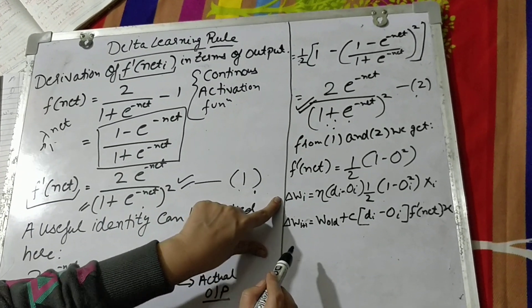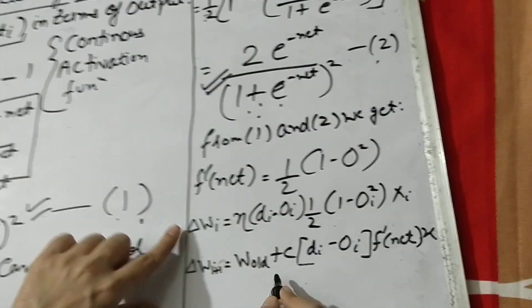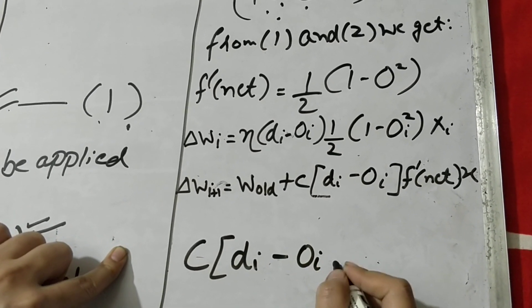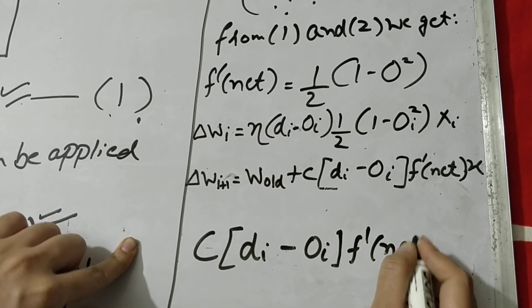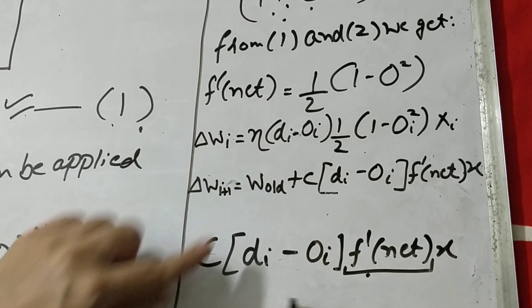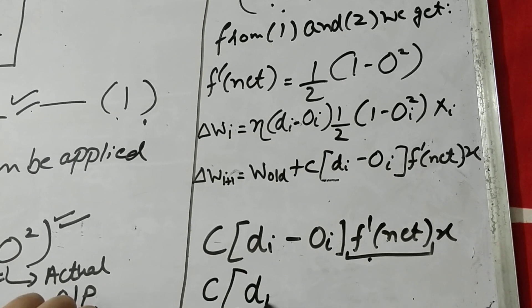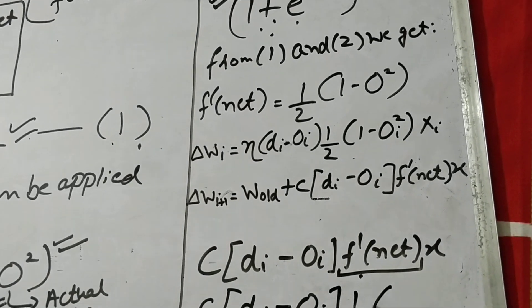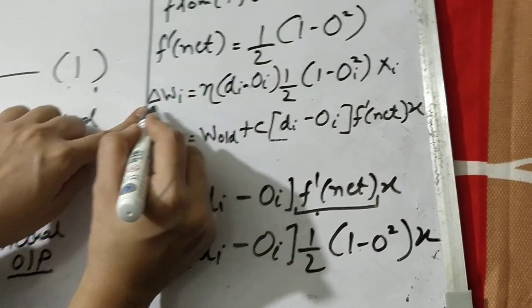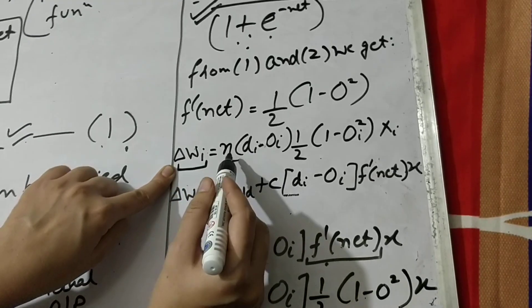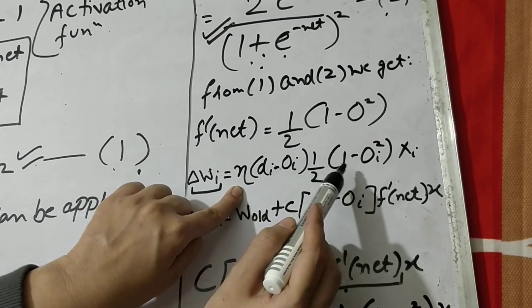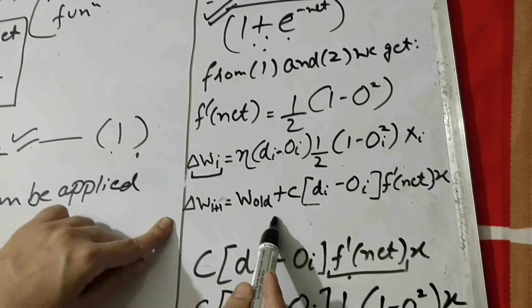Looking at the formula from the previous video, the delta learning rule presents: c into (d minus o_i), multiplied by f'(net) into x. Now we can compute this value and write: c into (d_i minus o_i) times half of (1 minus o) squared, into input x. At this particular instant we have substituted the value into the whole formula.